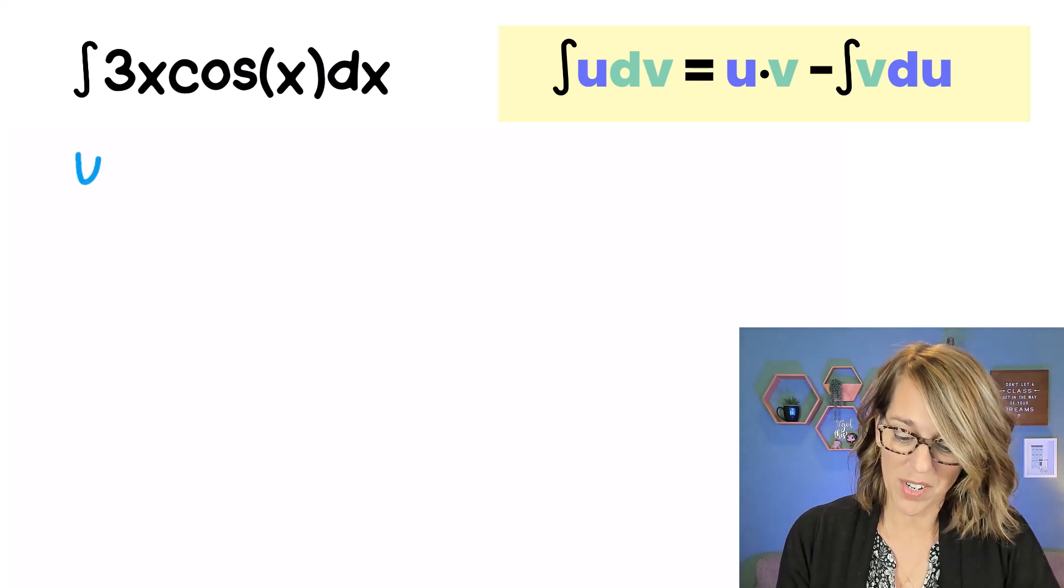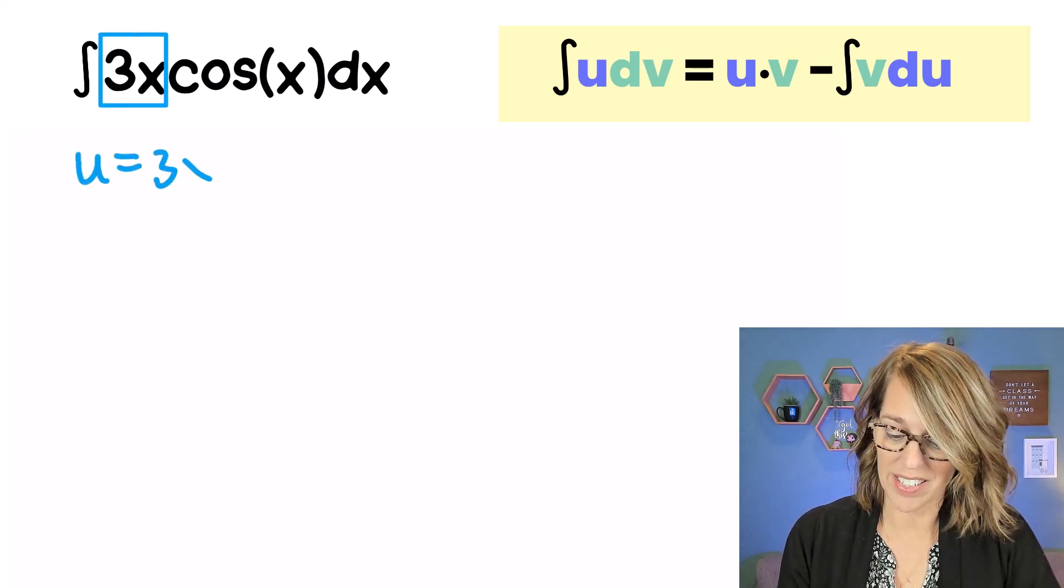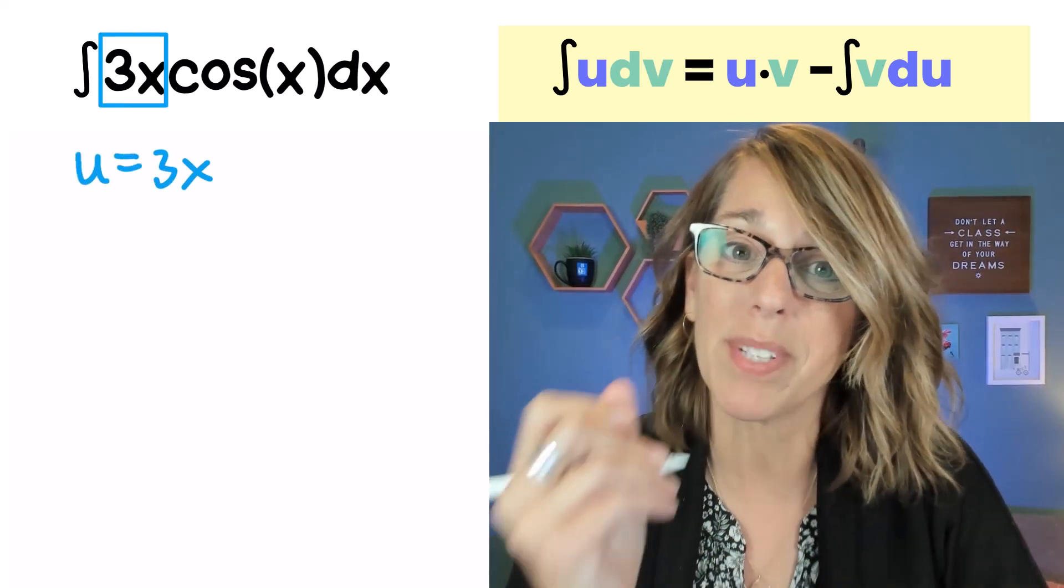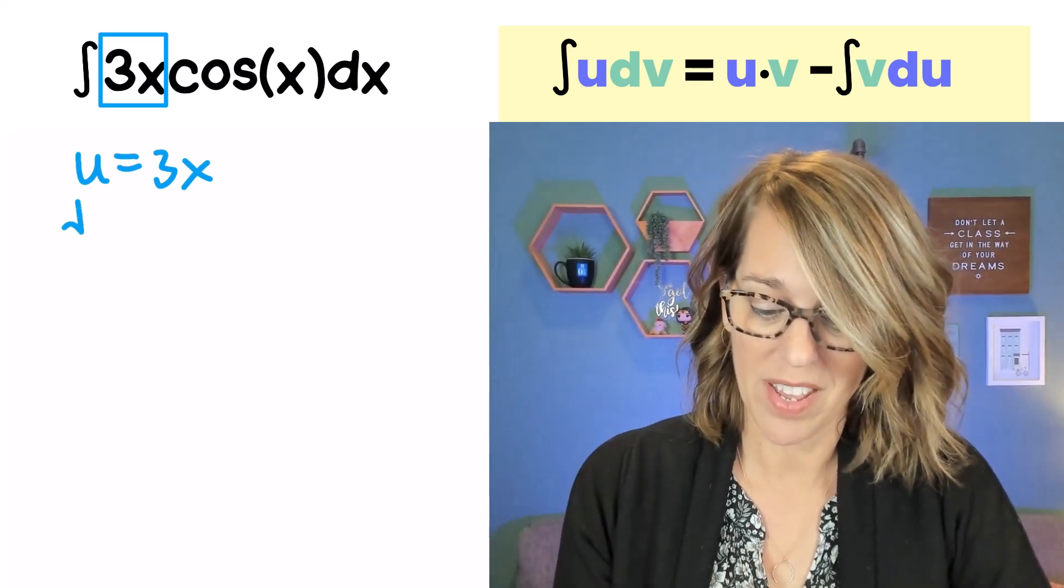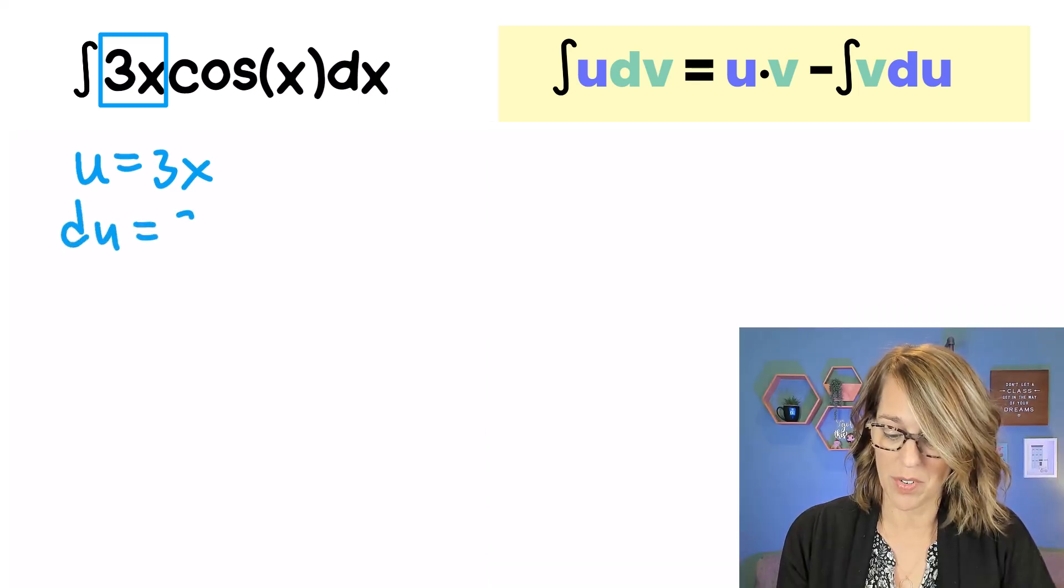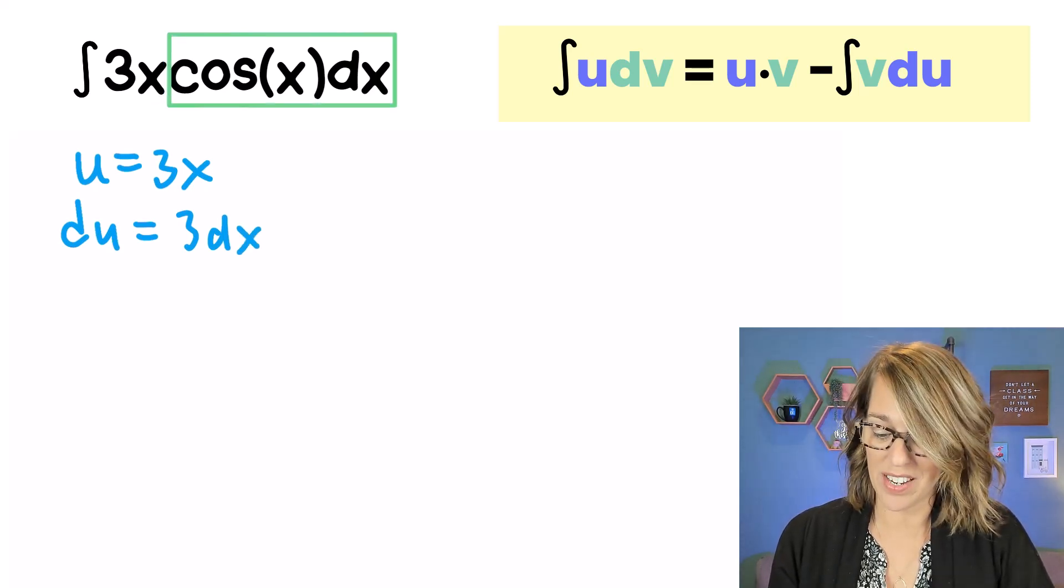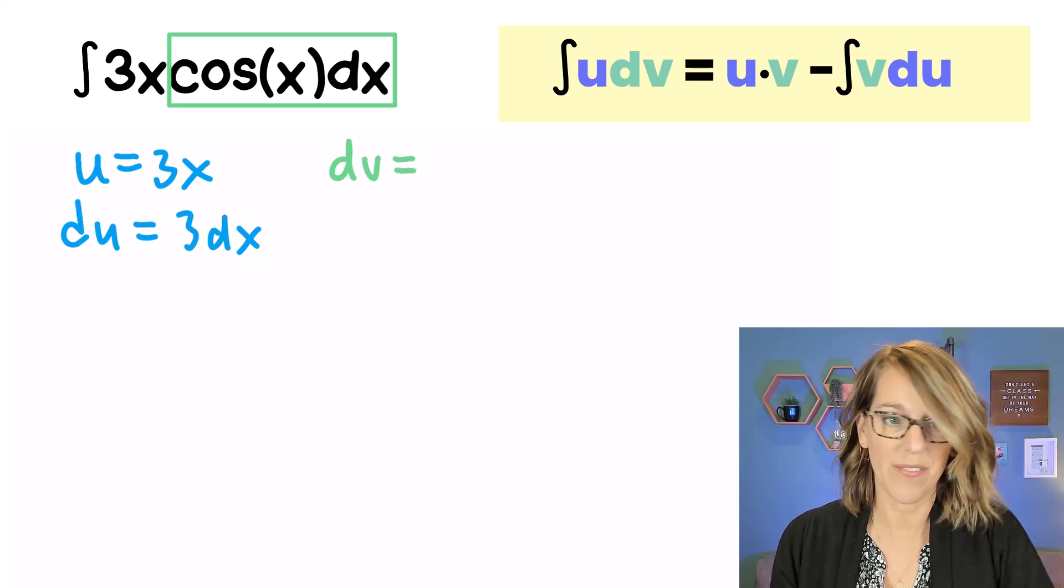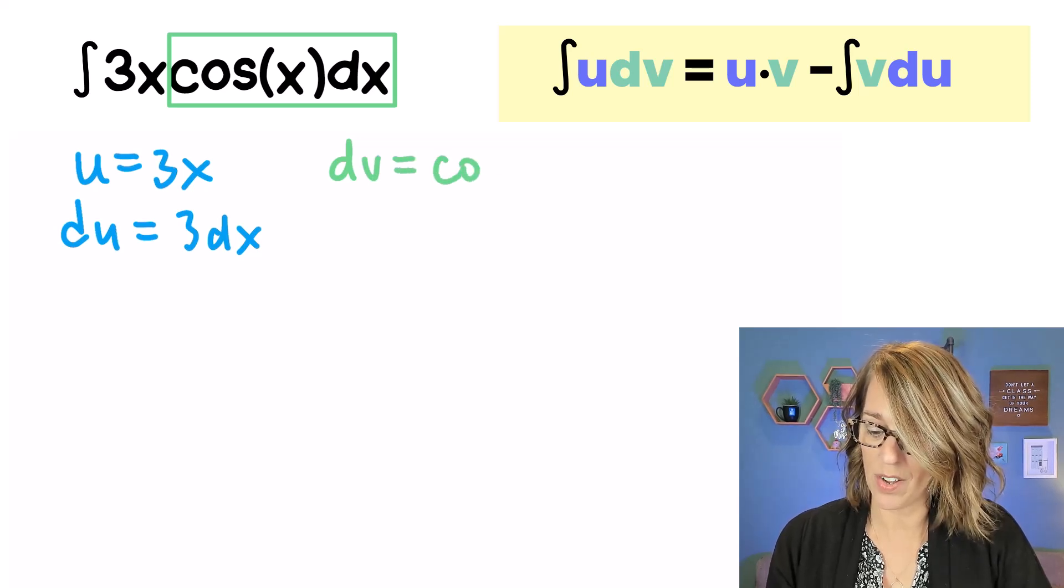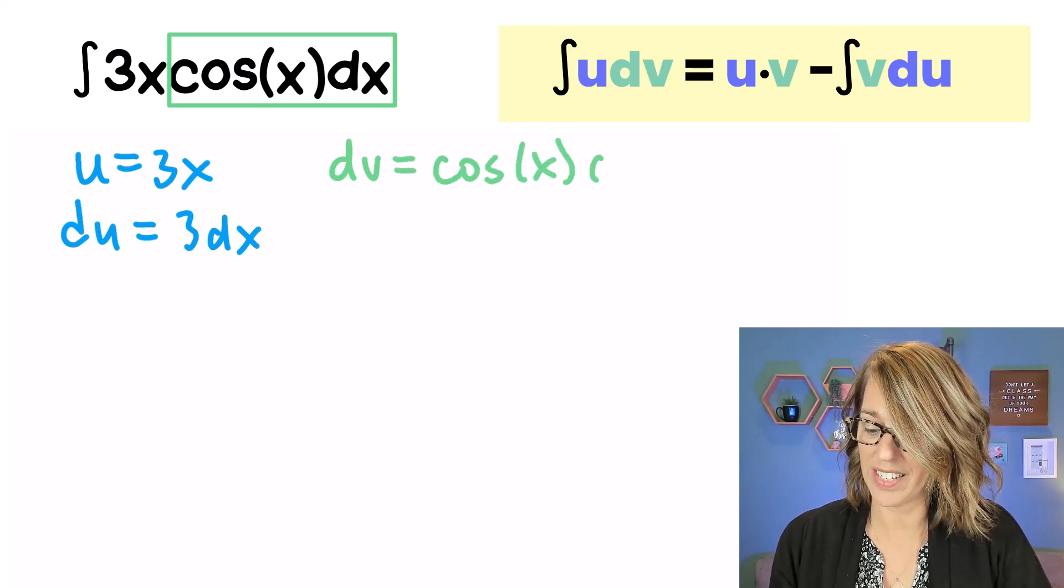Now I'm going to choose u to be 3x, and I'm choosing it because it's going to become simpler when I take its derivative. So du is equal to 3dx. That means that the rest of this integrand is going to be our dv. So dv then is the cosine of x dx.